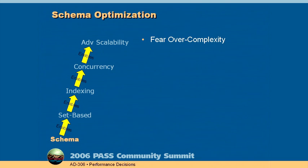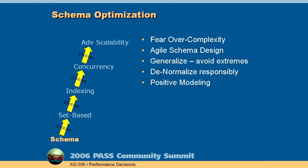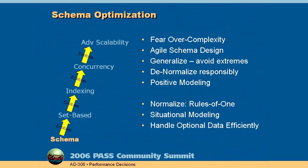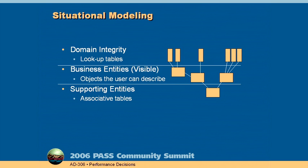It begins with the schema. The best practices of optimizing the schema is to completely fear over-complexity. I've seen so many schemas that are so complex that it becomes impossible to write set-based code. Use good agile schema design — meaning lots of iterations and a team trying to figure out the best way to have the schema — and then analyze the schema for performance instead of only data integrity. In the schema, use generalization to avoid having too many tables. Avoid denormalization, and use denormalization only in a few key areas. Avoid modeling negative attributes; model only positive attributes, where a row means something exists rather than a row means something is not present. Always make sure you normalize.